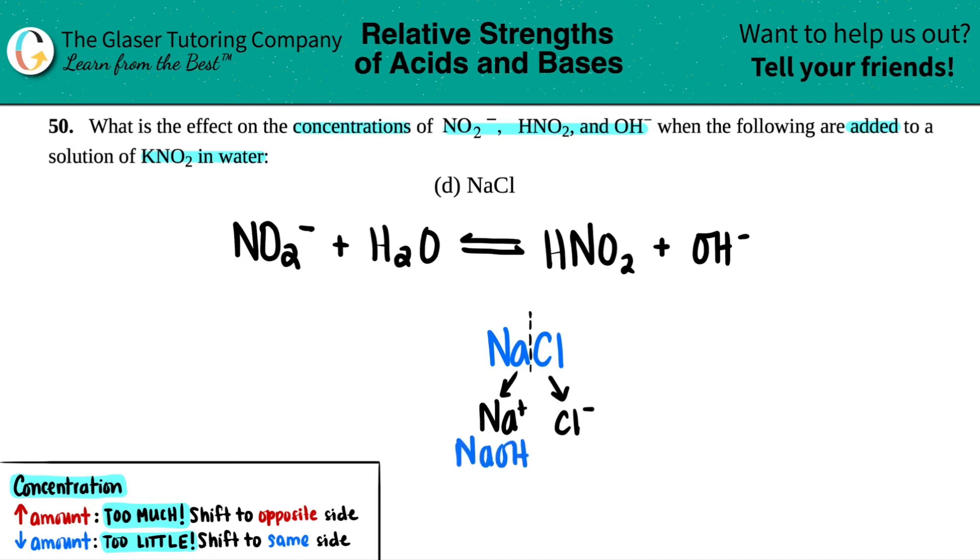And since NaOH is a strong base, the conjugate, just Na plus, would be so weak that it's basically neutral. It has no bearing on acidic or basic properties. So we won't use Na plus.